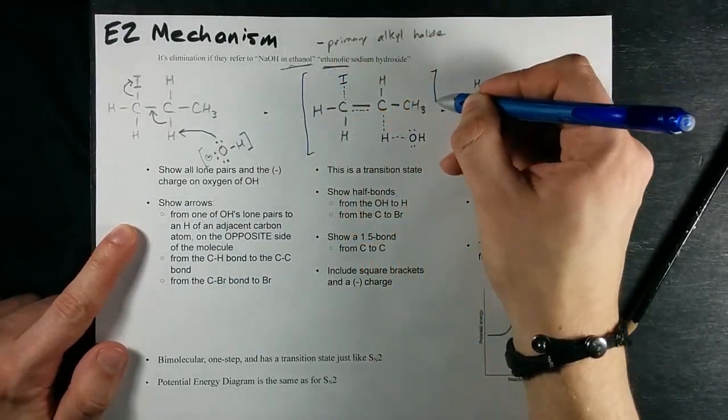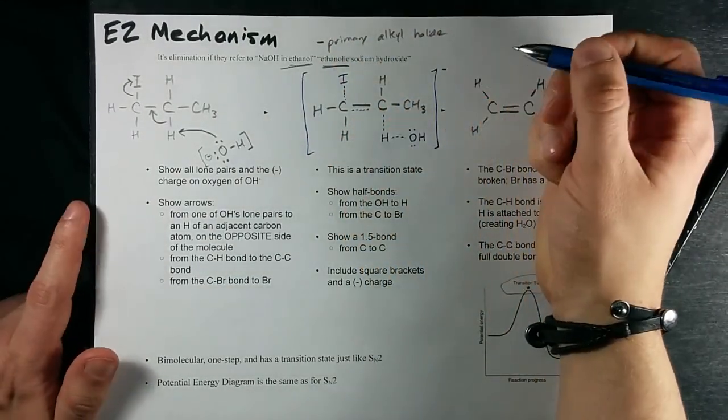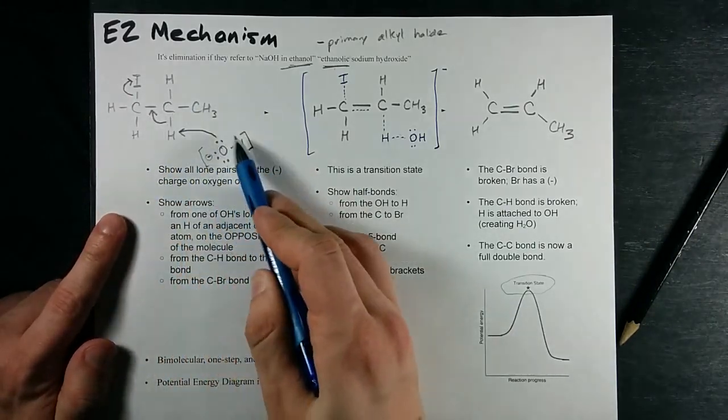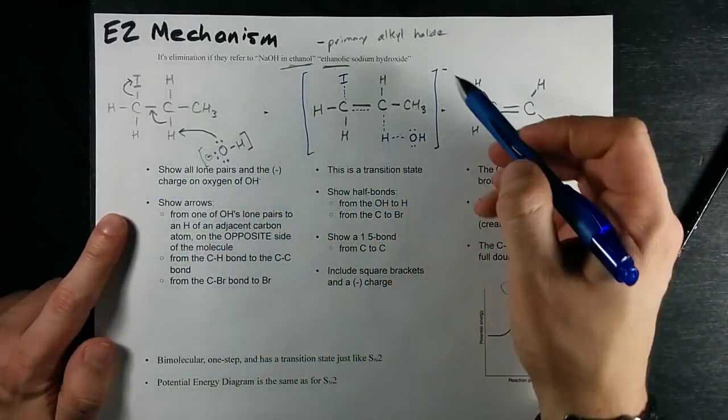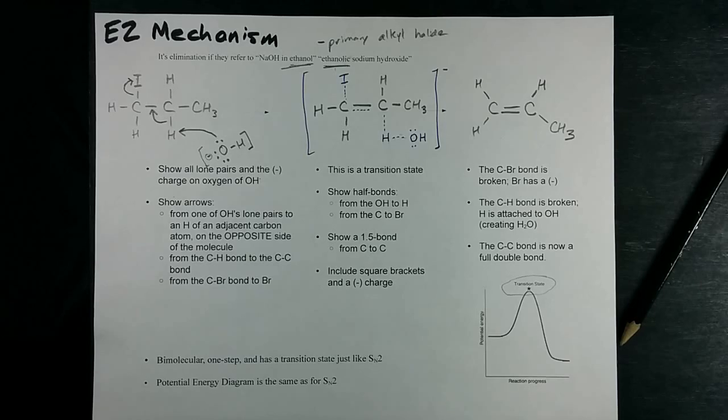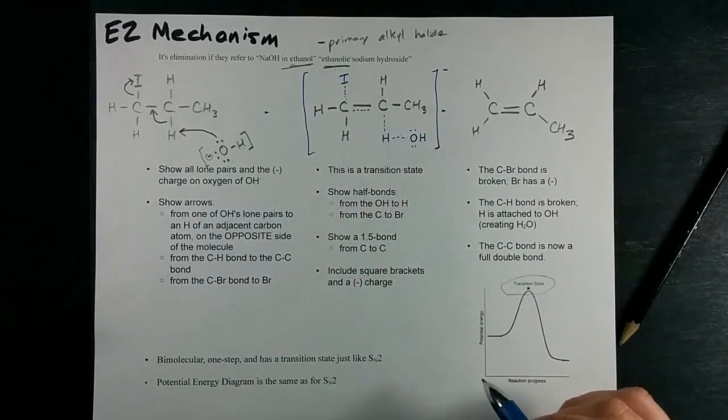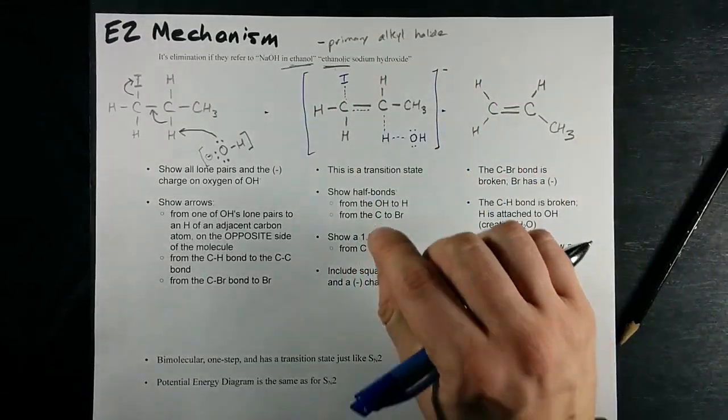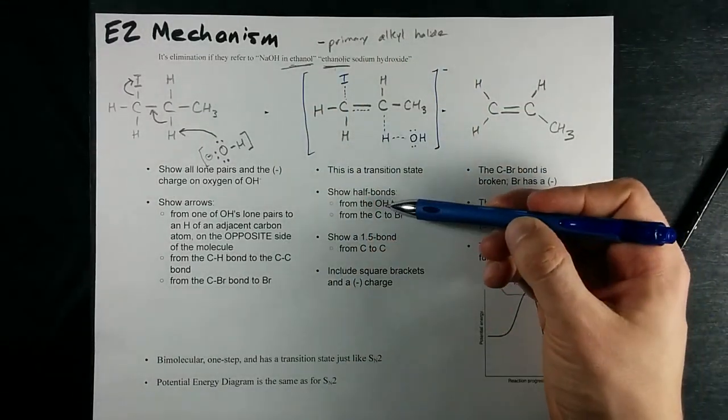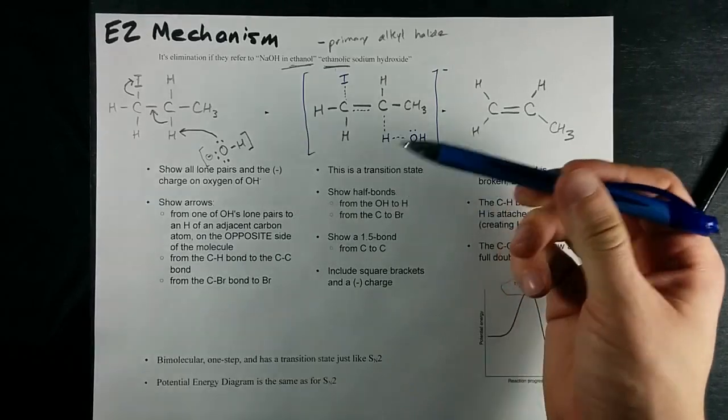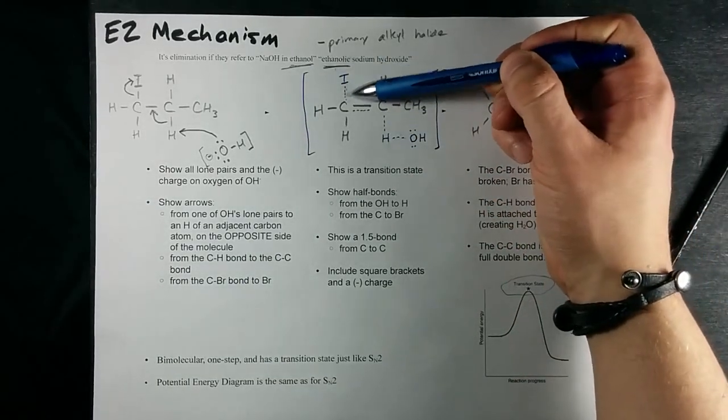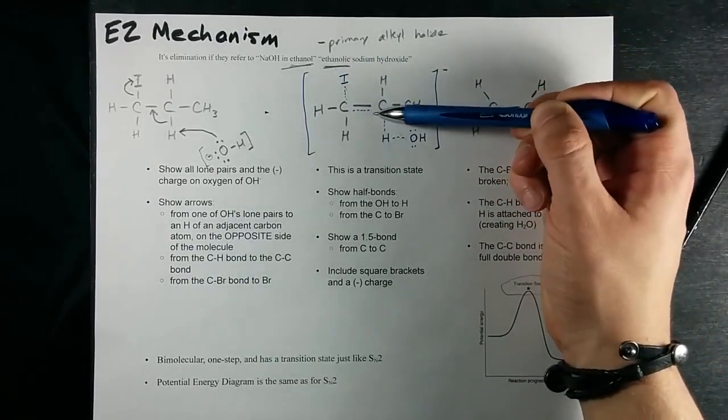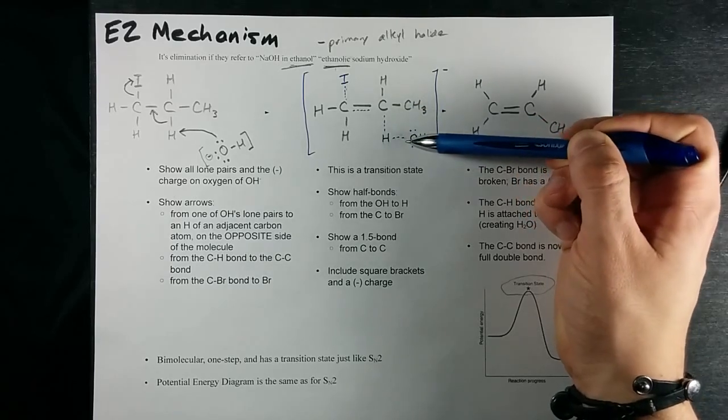Now, overall, this thing has a minus one charge. This was a neutral molecule and an OH minus ion combining, so there is a minus charge floating around there, but this is the transition state. Notice I've got four partial bonds here, and most teachers are going to want you to show all of that stuff. I've got a half bond here, one-and-a-half here, half here.